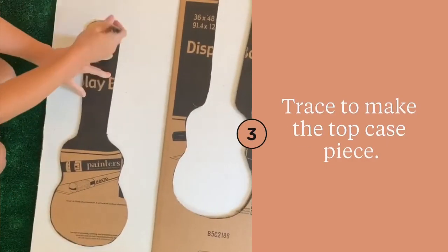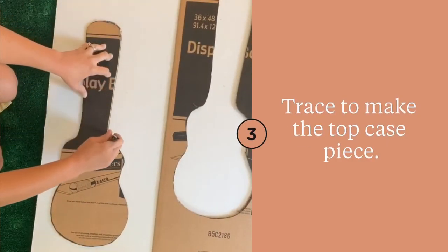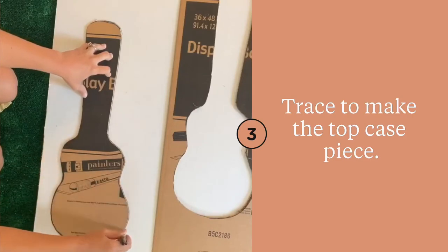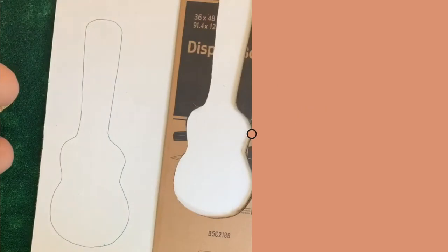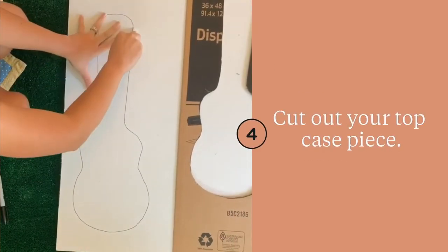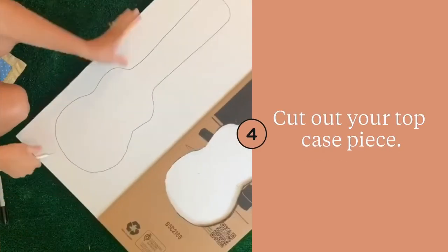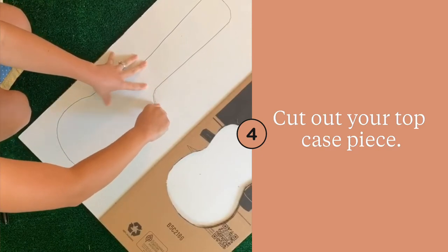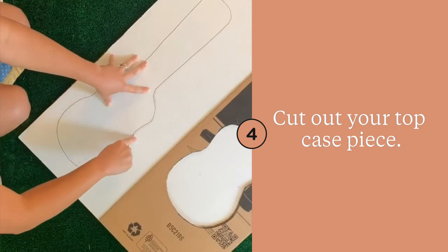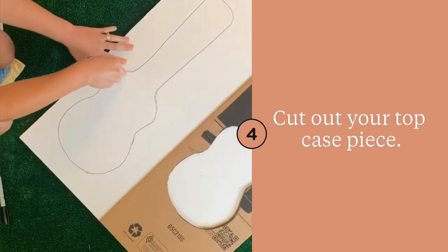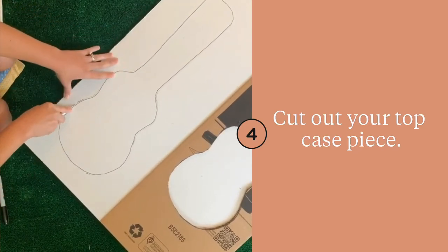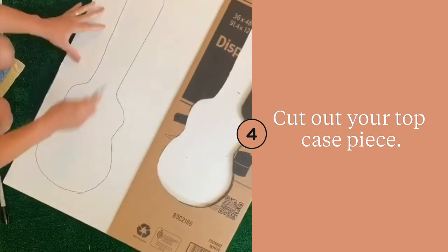Now that you have your bottom piece all cut out, use it as a guide to trace your top piece of the case. Once you have your top piece all traced out, you're going to use the exacto knife again to cut around the outside edge of this line. I cut around the outside edge just so that it's going to be slightly bigger than the bottom piece. That'll make it fit over the bottom of the case later on.